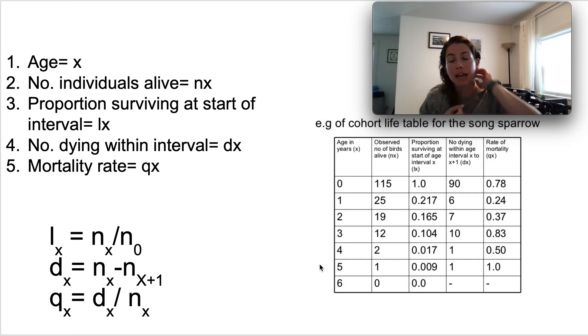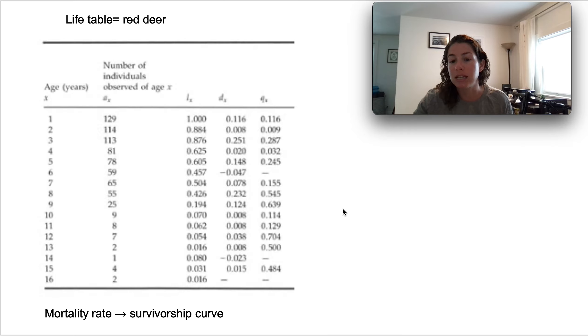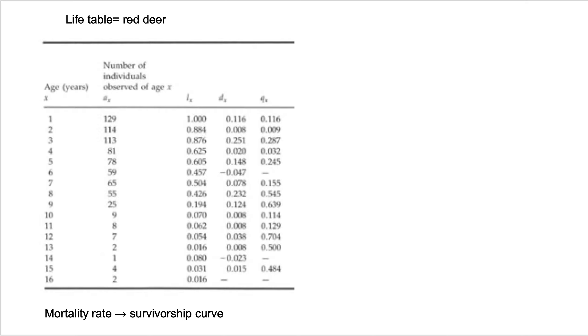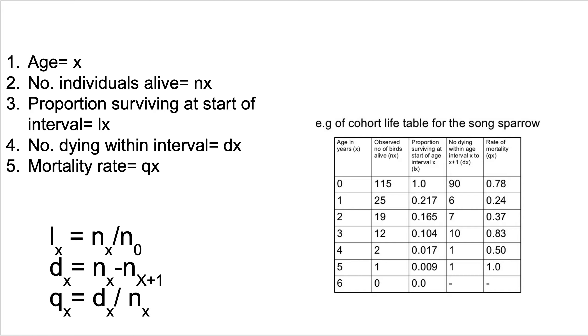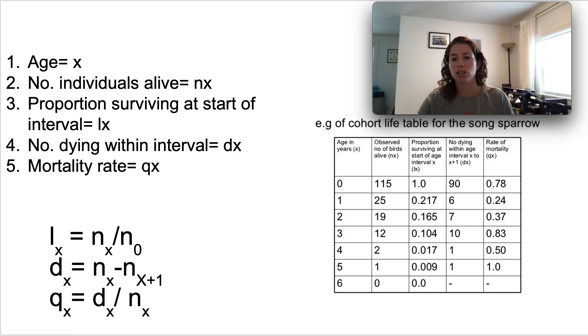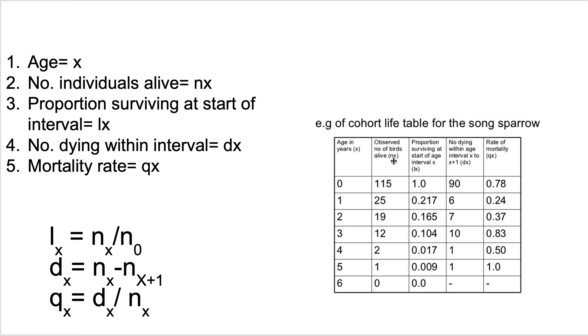All of this information comes together and forms a life table. A life table is broken up into cohorts or age or year, or they can do it by groups. Age in years here is x. So age here, this is from year 0 to 1, from 1 to 2, 2 to 3, 3 to 4—those are our cohorts, our intervals. And here this is the observed number of birds alive, that's nx. So that's n, the number of birds observed at interval x.